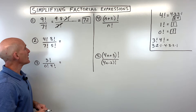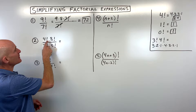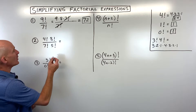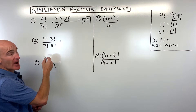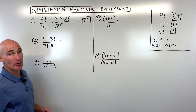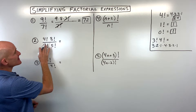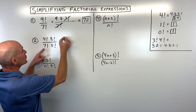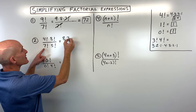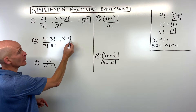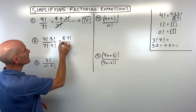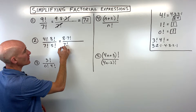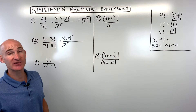For example number two, we have four factorial times eight factorial, all divided by seven factorial times five factorial. We have to expand out these factorials first. Eight factorial is eight times seven times six times five times four all the way down to one, or I could just stop here at seven factorial — seven times six times five all the way down to one, or just leave it as seven factorial. Now we can see those seven factorials are canceling numerator and denominator.